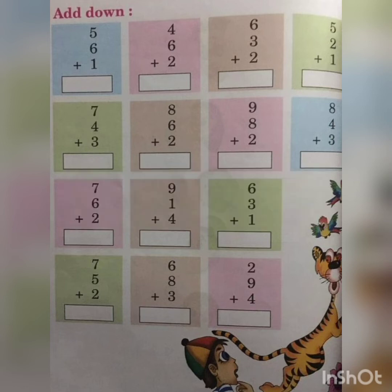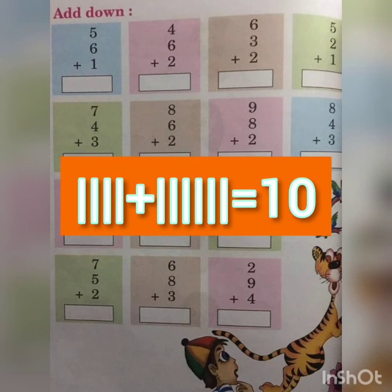Now look at the second question. Just like the first one, there are three numbers to add: 4, 6 and 2. So just like the first one, you will add the first two numbers, 4 and 6. That means you can draw four lines and another six lines.